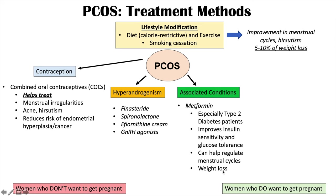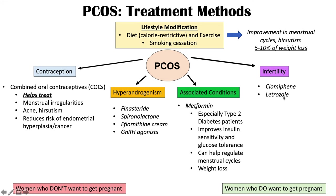For women who do want to get pregnant, the treatment category is infertility. The first line treatment is clomiphene, used to help increase ovulation. Letrozole is another newer treatment for ovulation. Metformin can be used as an adjunct with clomiphene or letrozole to help prevent ovarian hyperstimulation syndrome. Importantly, metformin should be stopped once the patient is pregnant.